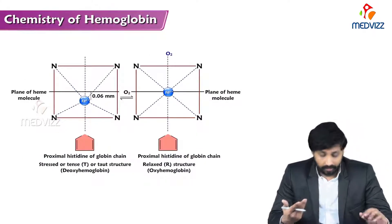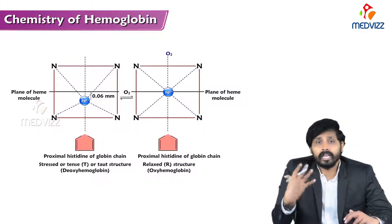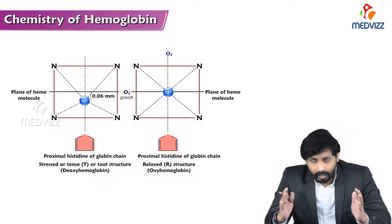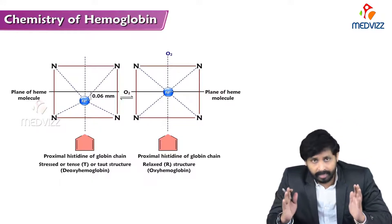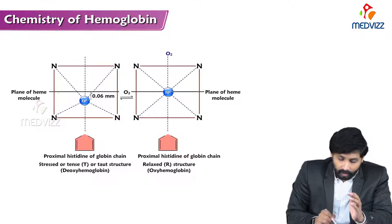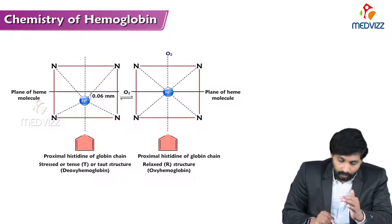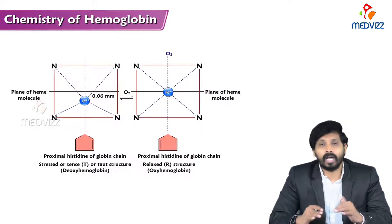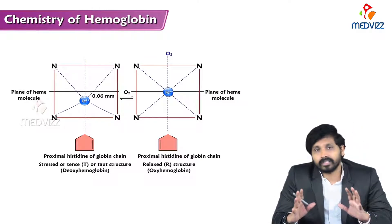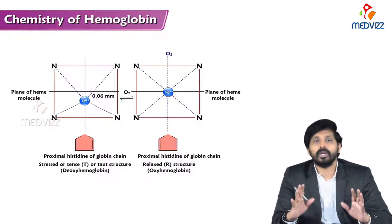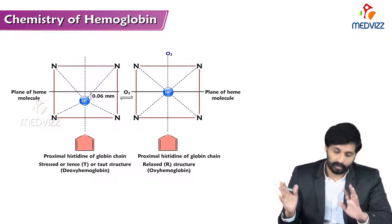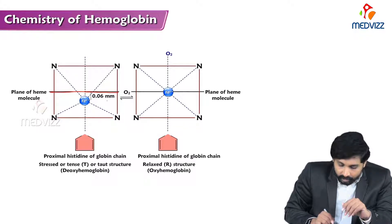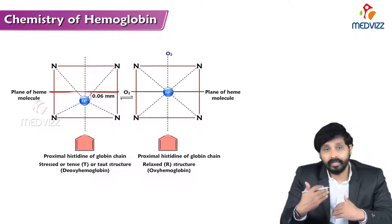From a three-dimensional point of view, looking at the heme inside a globin chain: before attachment of oxygen, the iron atom sits 0.06 nanometers below the center plane of the heme ring. When oxygen attaches, it pulls the iron molecule up to the center, causing breakage of bonds and converting the stressed T form into the relaxed R form — oxyhemoglobin.